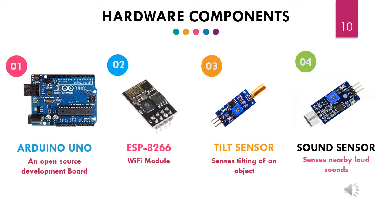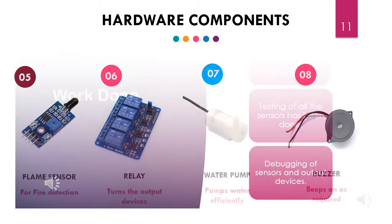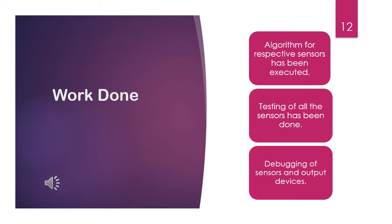Here come the hardware components we are using. First, we are using an Arduino Uno as the development board. Then an ESP8266 as the Wi-Fi module. Then a tilt sensor which senses the tilting of an object, and a sound sensor which senses nearby loud sounds. Next is a flame sensor for detection of forest fires, a relay switch which turns on the output devices, a water pump as the output device for the flame sensor — which automatically turns on when there is fire — and a buzzer as the output device for the tilt sensor, which buzzes when illegal activity is occurring.